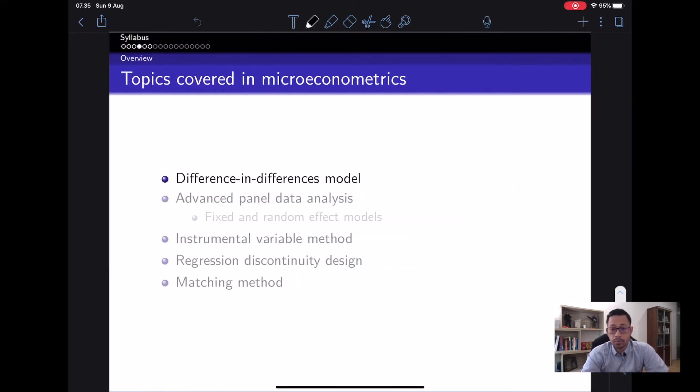There are numerous topics we're going to cover in microeconometrics. The first one is the difference-in-differences model, or DID model. We're also going to learn advanced panel data analysis using both fixed and random effect models. We're also going to learn about instrumental variable method, which has gone through years of development, and it's a very exciting time to learn more about instrumental variable.